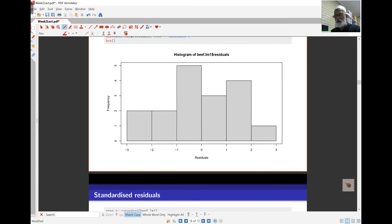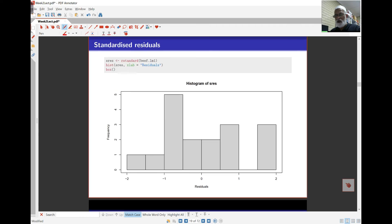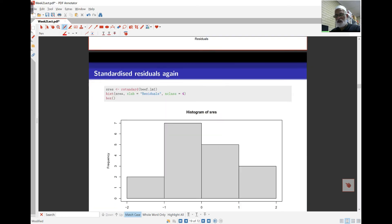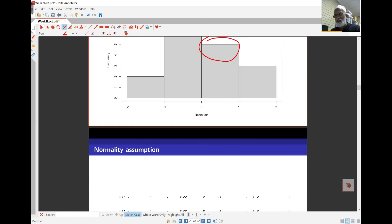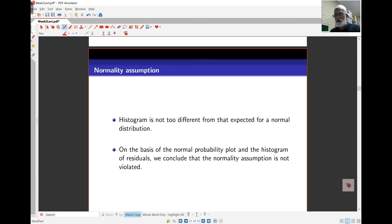But the thing with histograms is they're very, very sensitive to the class boundaries. So if you change the class boundaries here, the histogram will change shapes. So the next one here, I've got fewer classes in the histogram. Only four. You can see it looks a bit more symmetric. There's some problem over here, we can see. And that may be what we saw earlier also in the normal probability plot. But other than that, there's nothing serious here.